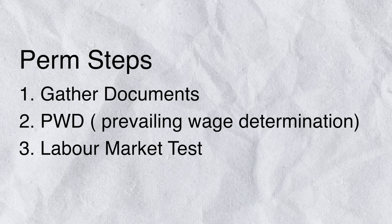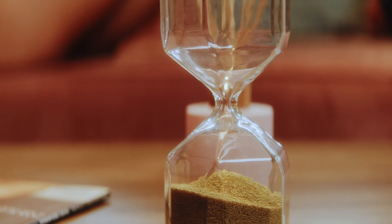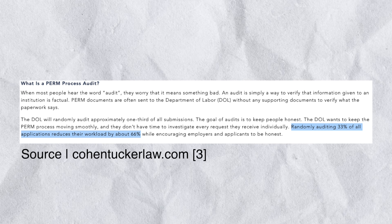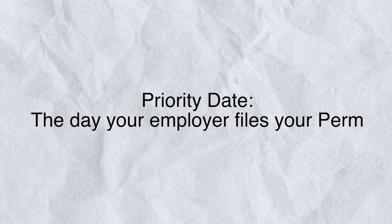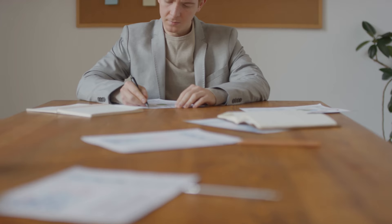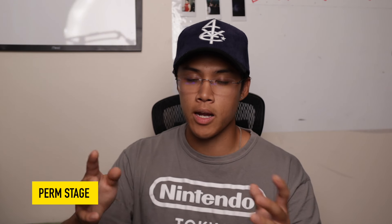After gathering documents, getting the prevailing wage determination, and doing the labor market test, you can finally file your PERM, which is step four. Your lawyers use everything gathered in steps one through three to file your PERM. This step, waiting for a response from the Department of Labor, can take a very long time — like a year if you don't get audited, and even longer if you do. About 30% of cases get audited, so it's really a game of chance. The date your employer files your PERM is called your priority date, which is very important. For me, the whole PERM process from start to end took just under two years, and I think around two years plus or minus a couple of months is a good estimate.